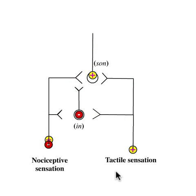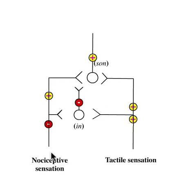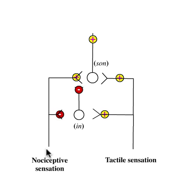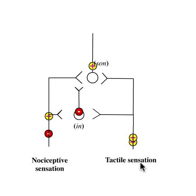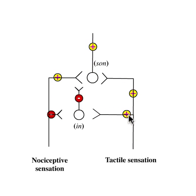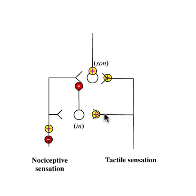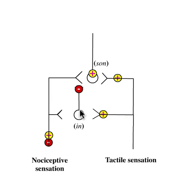So that is the essence of gate control theory: the nociceptive fibers are inhibited by the impulses coming in the neurons transmitting the tactile sensation, through the interneuron.